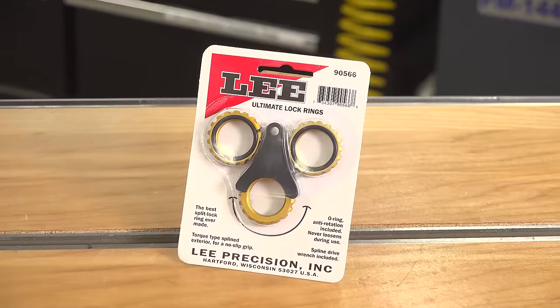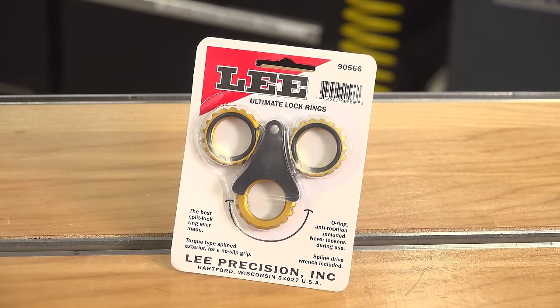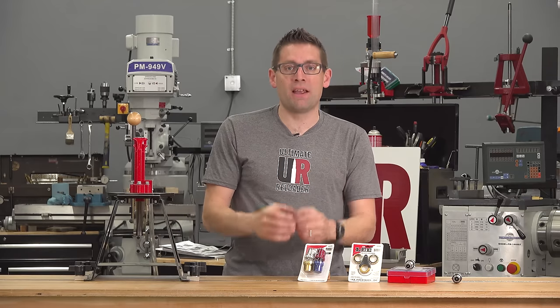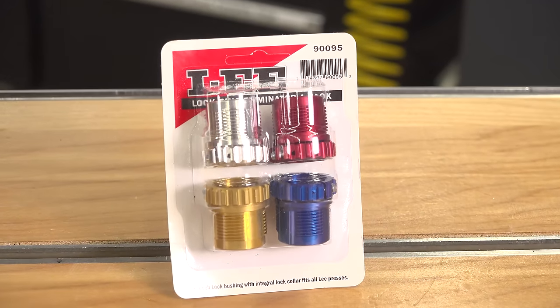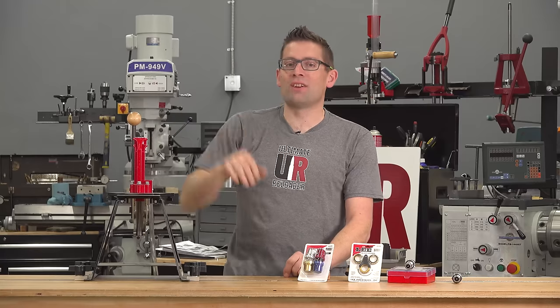But there's also the Ultimate Die Lock Rings. These are of a split design and are tightened in place so that they won't move. And also the lock ring eliminators which work with the breech lock system, a quick change die system.